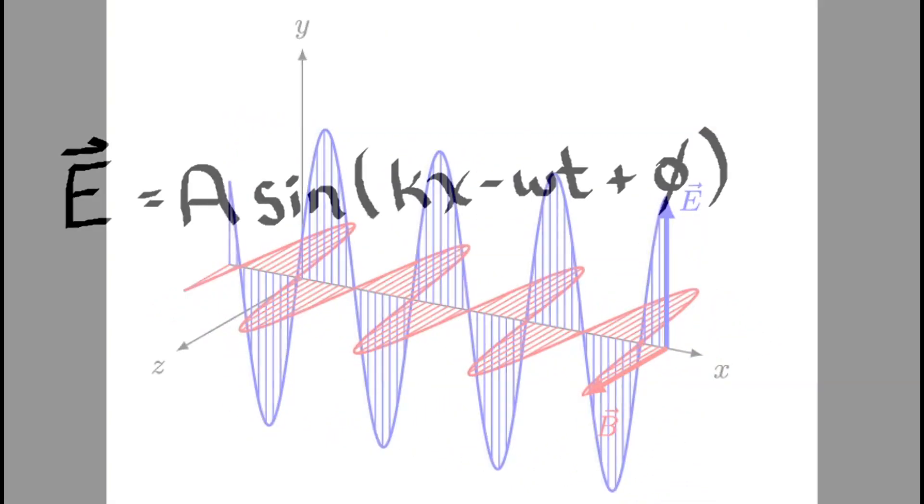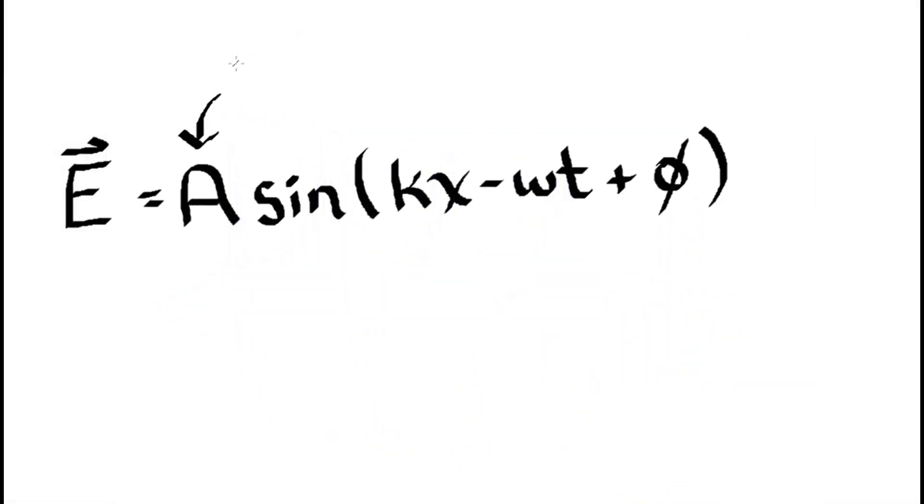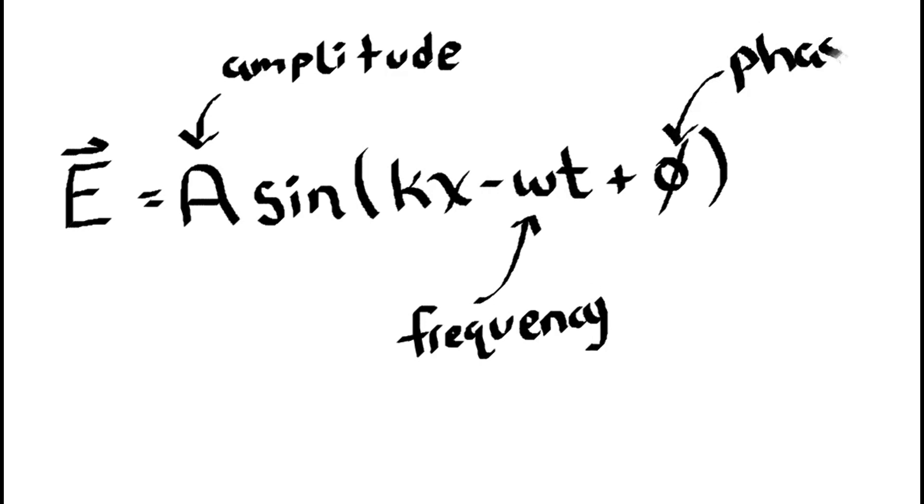If we think of light as a traveling wave, that means we can model it with a function that hopefully you're all familiar with, a sine function or a cosine function. This means it has an amplitude, a frequency, and a phase shift.